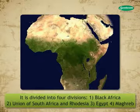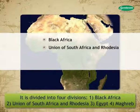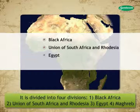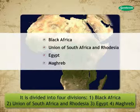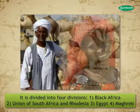It is also divided into two parts due to the Sahara Desert, into four divisions: 1. Black Africa, 2. Union of South Africa and Rhodesia, 3. Egypt, 4. Maghreb. There are differences between the two parts in the fields of culture, religion and political history.